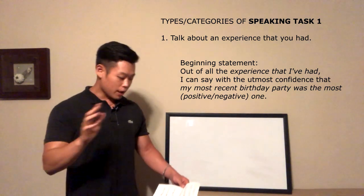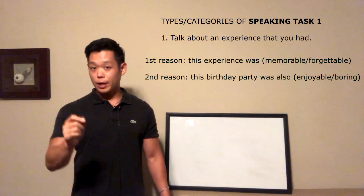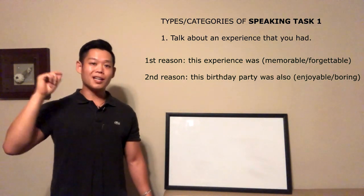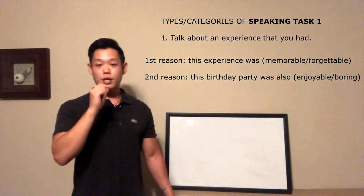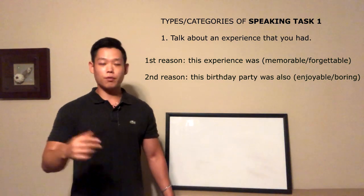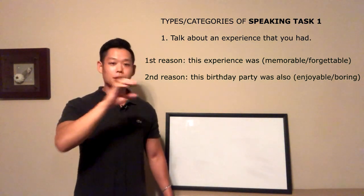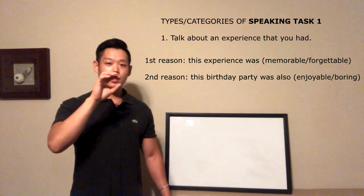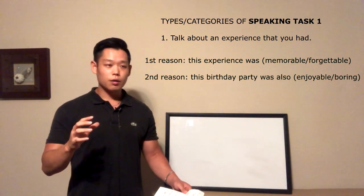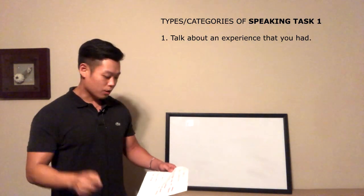For a negative experience, you only have to change the word 'positive' to 'negative' — the beginning sentence is almost identical. For the first reason, you're going to say 'memorable' for positive or 'forgettable' for negative. For the second reason, say 'enjoyable' for positive or 'boring' for negative. You'll need to come up with four details altogether — two for positive and two for negative.